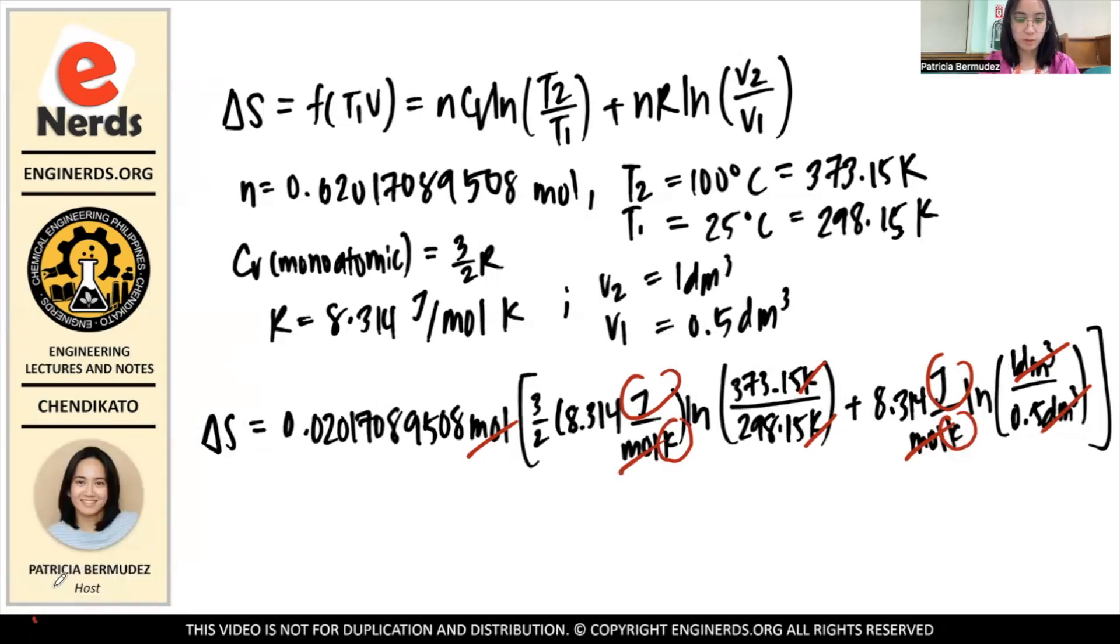So multiplying that, we have 3/2 times 8.314, and the change in entropy is 0.172685365 joules per kelvin.